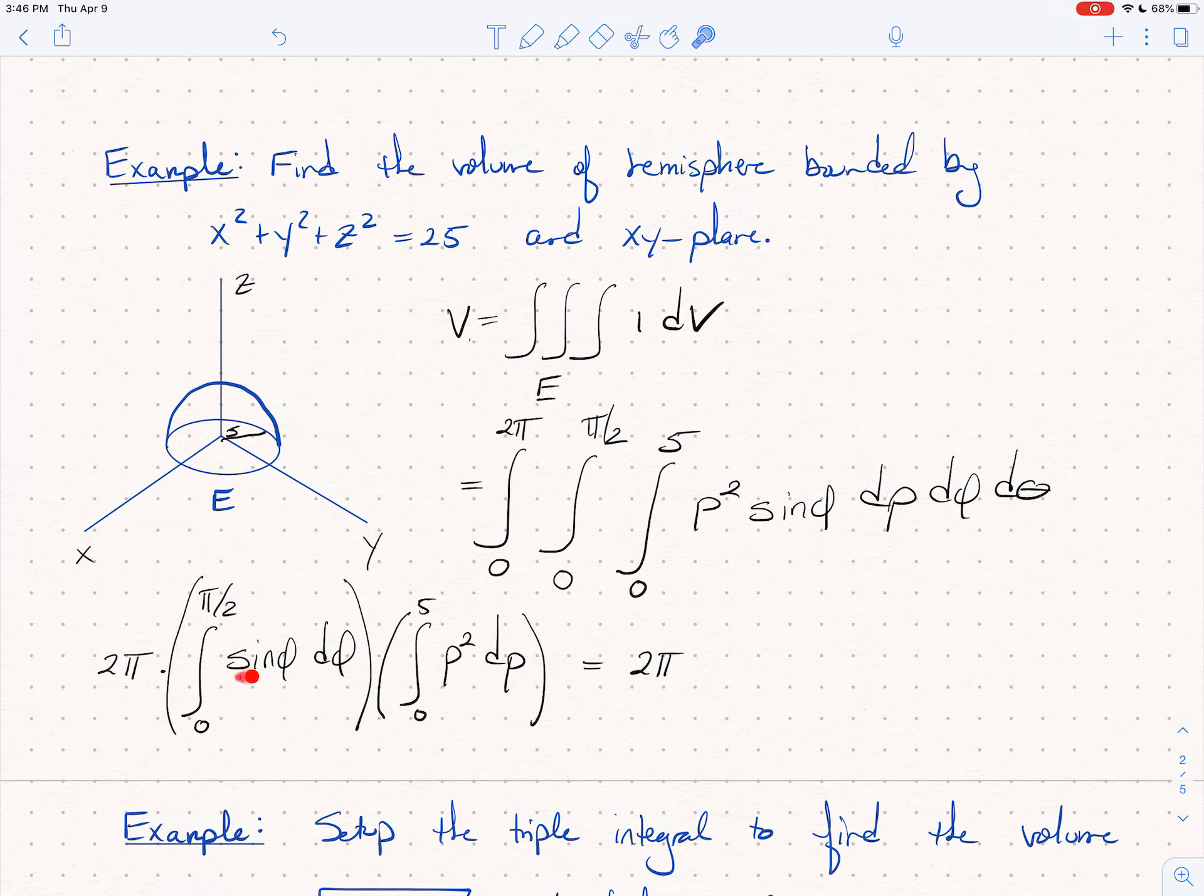We're going to get 2 pi. Integral of sine is minus cosine. Minus cosine of pi halve is 0. Subtract, plug in 0. So I get minus cosine of, I just said 1. Cosine of 0 is 1.